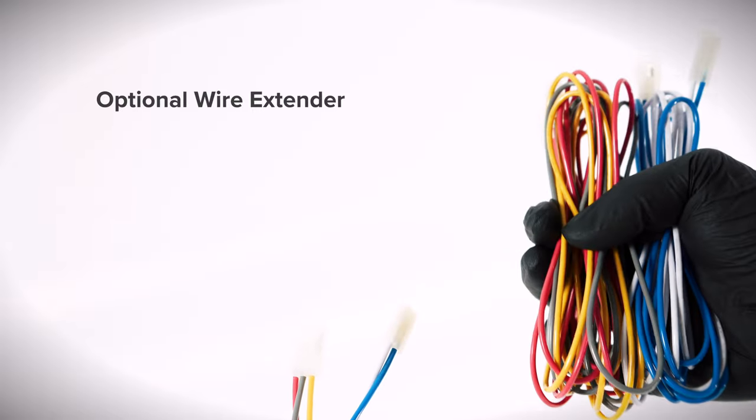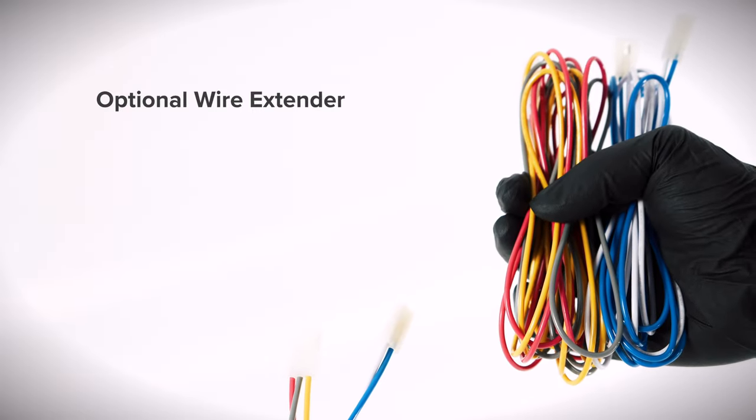If you purchased a longer down rod to install on the fan, you can use the optional wire extenders to provide more length. The wire extenders are not required if using the down rod included with the fan.